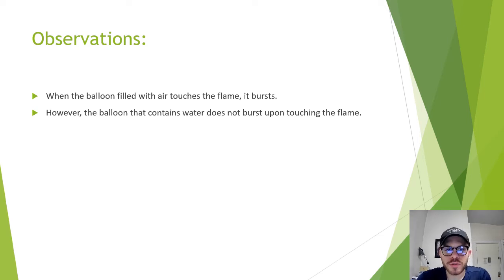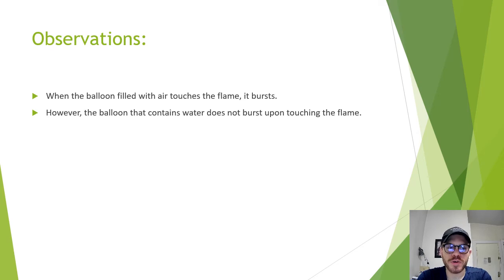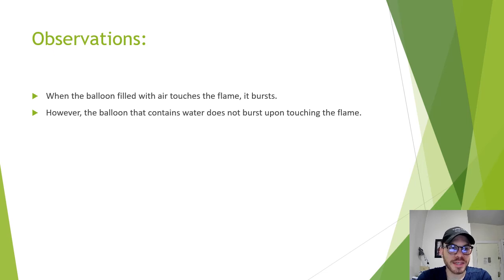Observations: when the balloon filled with air touches the flame, it bursts. However, the balloon that contains water does not burst upon touching the flame. This is because the air expands quickly when it does not absorb the heat from the rubber, causing the rubber to stretch and eventually break to let the expanded air out. The balloon having water and air does not burst because water absorbs the heat from the rubber, and through convection currents, it carries the heat away from the rubber while cold water replaces the rising water.